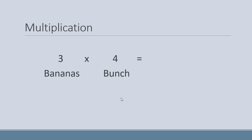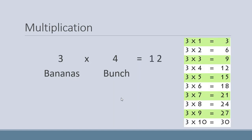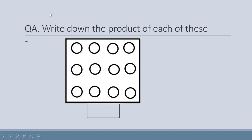Ab hum three ko four ke saath multiply karenge. Three one are three, three two are six, three three are nine, and three four are twelve. So the answer is twelve.